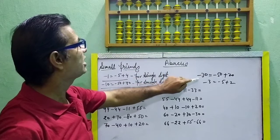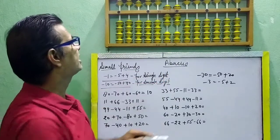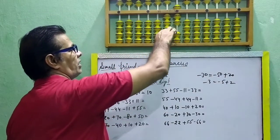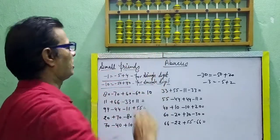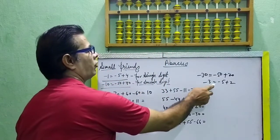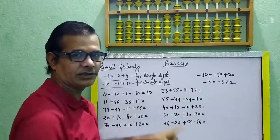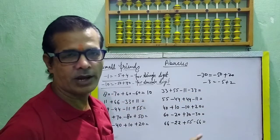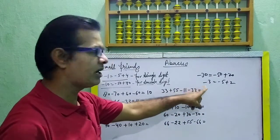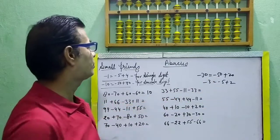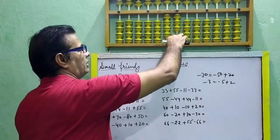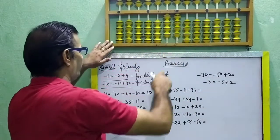Minus 30 is equal to minus 50 plus 20. Then 10, 20. And then: 3 formula — according this 3 formula, minus 3 is equal to minus 5 plus 2. Minus 5, plus 2.